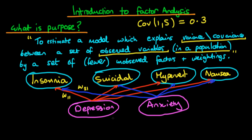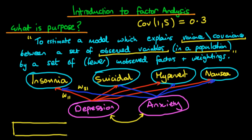I should mention that these unobserved factors can themselves be correlated. We can also think about higher-order models where these unobserved factors are actually caused by even further down the chain other unobserved factors. So we can think about the variance of a given variable.